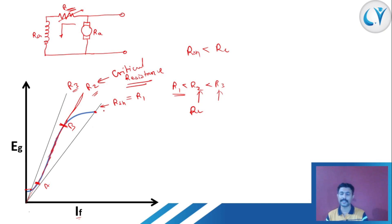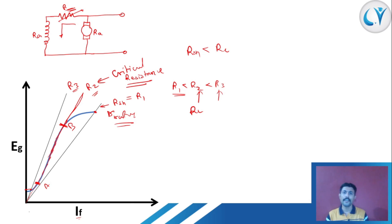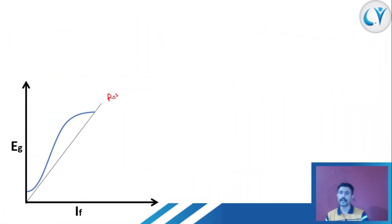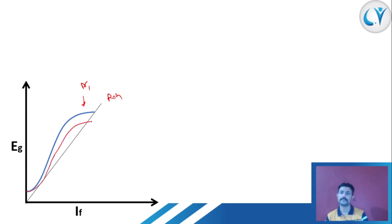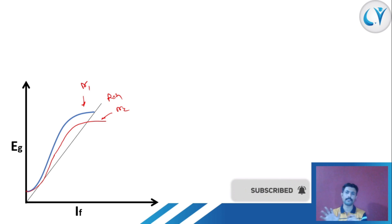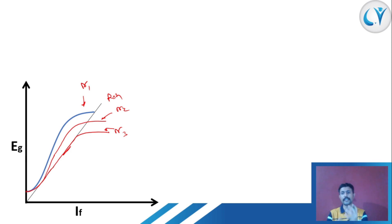This graph is plotted at the rated speed. If we change the speed, things are going to be a little bit different. With RSH resistance and OCC curve at speed n1, if we reduce the speed the graph shifts downward for speed n2, and if we reduce speed further it shifts down again for n3. So let us observe what information we can get from the OCC when speed changes.